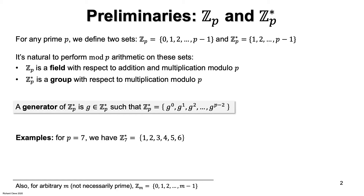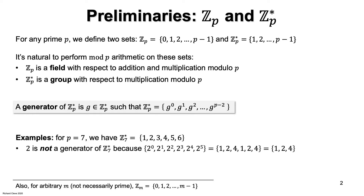Let's consider an example. If P is 7, then Z*P consists of the numbers 1 to 6. Obviously, 1 is not a generator since all powers of 1 are just 1. What about 2? 2 is not a generator either, because if we list the powers of 2 — 2 to the 0, 2 to the 1, 2 squared, and so on — we get the sequence 1, 2, 4, 1, 2, 4, etc. So we only get the set {1, 2, 4}, which is a proper subgroup of Z*P.